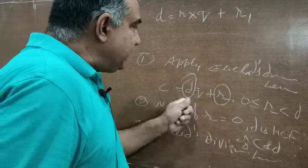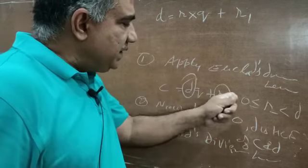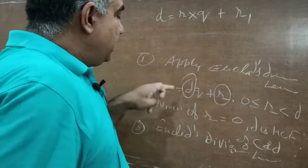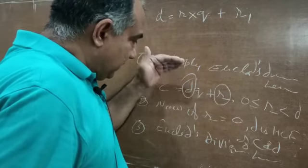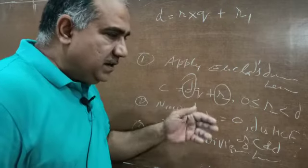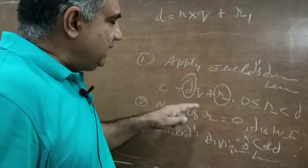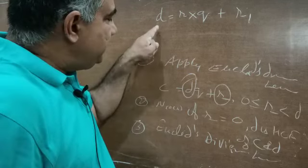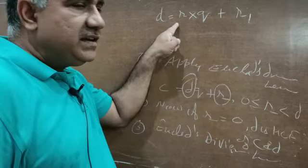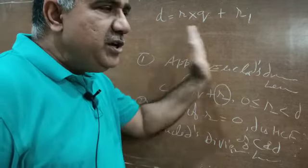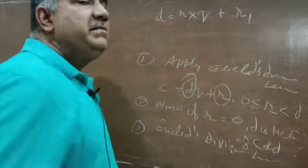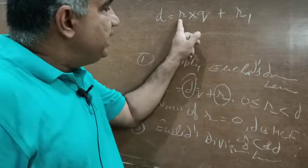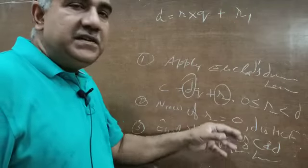After applying Euclid's Division Lemma for the first step, for the next step your divisor becomes the dividend and your remainder becomes the divisor. Keep going like this, and whenever you find the remainder is 0 at a particular step, whatever is your divisor at that step — that is the HCF of the given quantities. Here the quantities were named C and D.